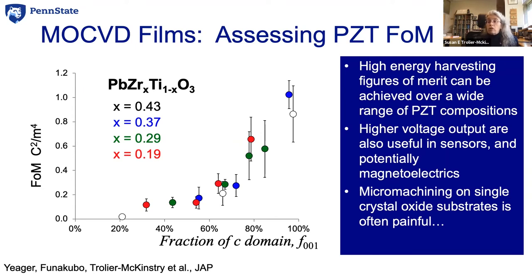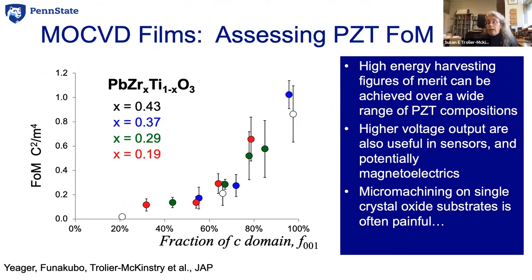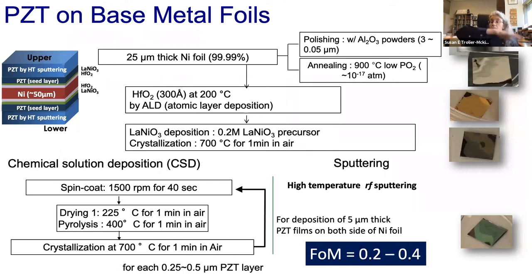Trying to make an energy harvester from these interesting materials, we grew them on single crystal oxide or fluoride substrates. When we made really thin structures, hung a heavy weight, and oscillated them, they tended to break right at the root of the cantilever — they worked great one time. So we looked at what we could do to oscillate for a really long time without fracture while still obtaining the desired out-of-plane polarization.